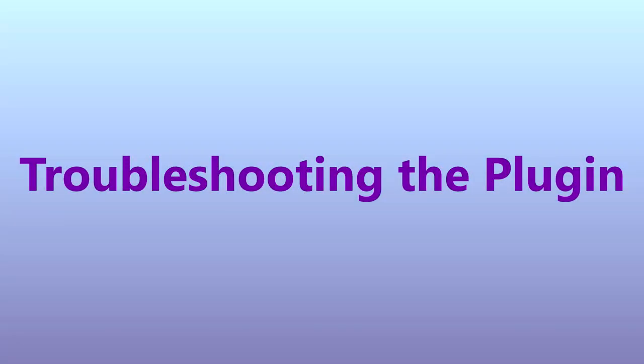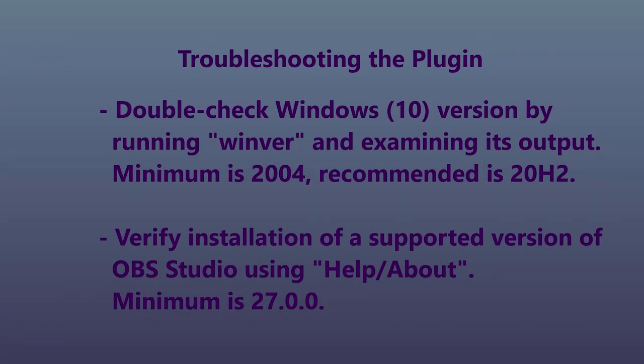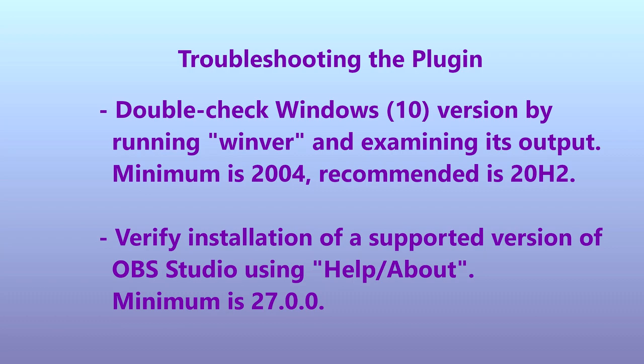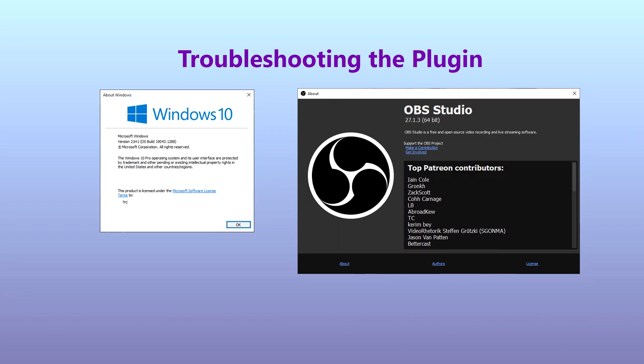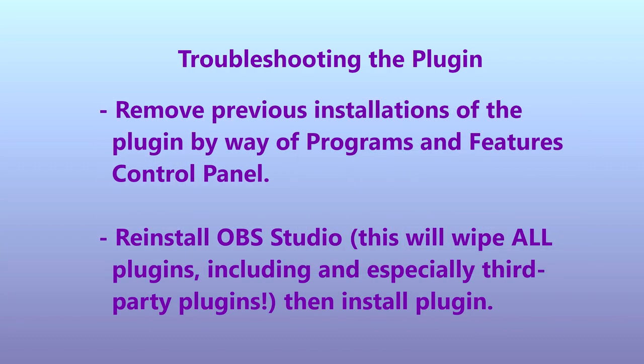For troubleshooting installation of this plugin: double-check which version of Windows 10 you are using by typing WinVer in a command prompt or Run dialog and examining its output. The minimum required is 2004 and the recommended version is 20H2. Windows 11 is also supported. Also verify you are using a supported version of OBS Studio — the minimum is 27.0.0. One potential solution is to uninstall previous versions of WinCapture Audio to remove any remnants of the old version.